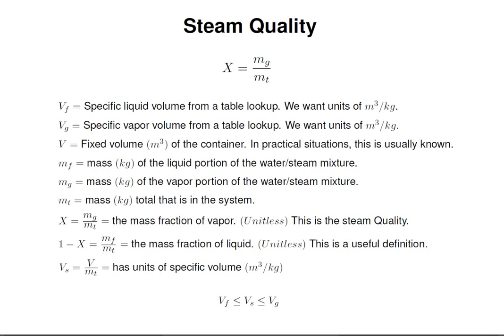Water vapor does not behave very closely to an ideal gas as temperature goes up, and so we use water tables, also called steam tables, to find specific volumes Vf and Vg. Vf is specific liquid volume from a table lookup. We want units of cubic meters per kilogram. Vg is specific vapor volume from a table lookup.